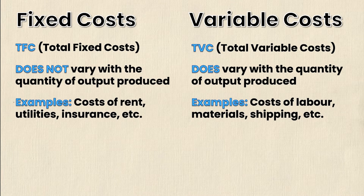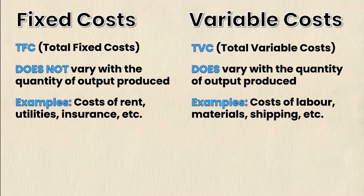For fixed costs, examples include rent or leasing of a warehouse, utilities, and insurance. These things need to be paid no matter what your output is, even if it's zero. Variable costs include things such as the cost of labor, materials, shipping, et cetera, which will fluctuate depending on how much output you're producing.